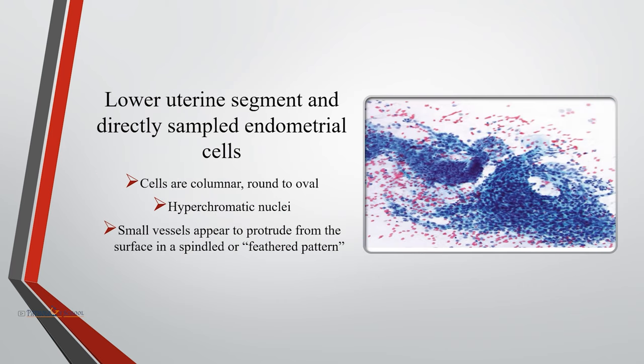Cells directly sampled from the lower uterine segment are usually columnar, round to oval, with hyperchromatic nuclei. Branching glands can be seen in some groups; the glands are surrounded by stroma which may contain small vessels that appear to protrude from the surface in a spindle or feathered pattern.